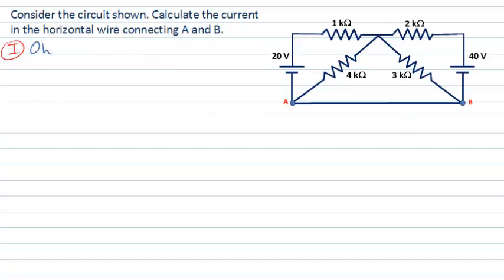If we tried to use Ohm's law to determine the current we're being asked for, we would need to ascertain what the various currents were through the various resistors to find the potential difference at various locations. In this instance, this will prove to be far too difficult. Instead, a better approach will be via Kirchhoff's circuit laws, where we can think about the currents at various nodes and the currents around various loops.